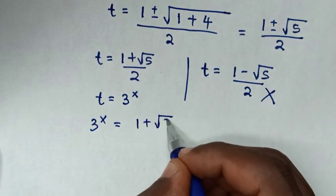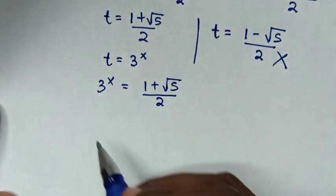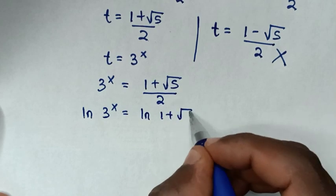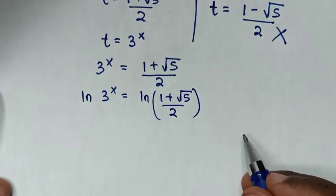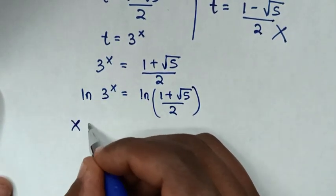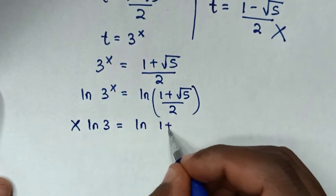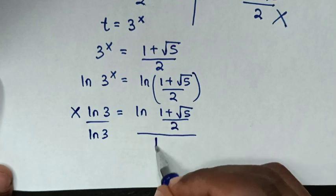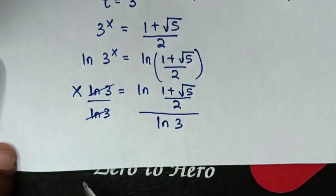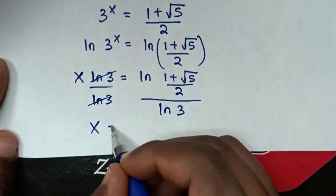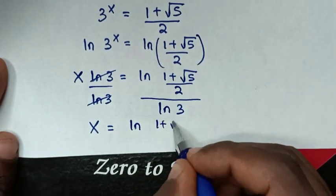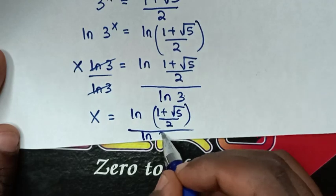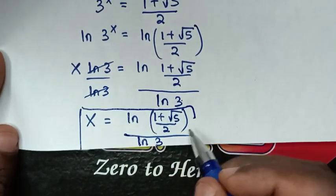So we compare with the remaining solution: 3 power x equals (1 plus square root of 5) over 2. We apply ln to both sides, giving ln of 3 power x equals ln of (1 plus square root of 5) over 2. The power x moves down, so x times ln 3 equals ln of (1 plus square root of 5) over 2. Dividing both sides by ln 3, x equals ln((1 plus square root of 5) over 2) divided by ln 3.